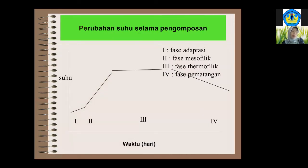Apa yang terjadi selama proses pengomposan? Proses pengomposan itu terjadi sebenarnya fermentasi yang bukan fermentasi tunggal, ada beberapa suksesi atau pergantian kelompok-kelompok mikroorganisme yang terlibat. Salah satu indikator yang mudah diamati adalah adanya perubahan suhu. Fase pertama adalah fase adaptasi — pada saat tumpukan kompos dibuat, dari suhu ruang, di satu atau dua hari ini terjadi fase adaptasi dengan kenaikan suhu sedikit.